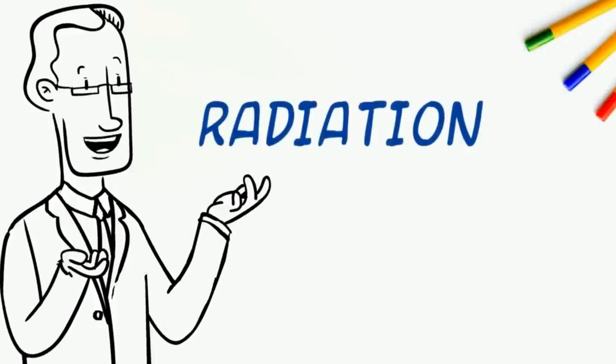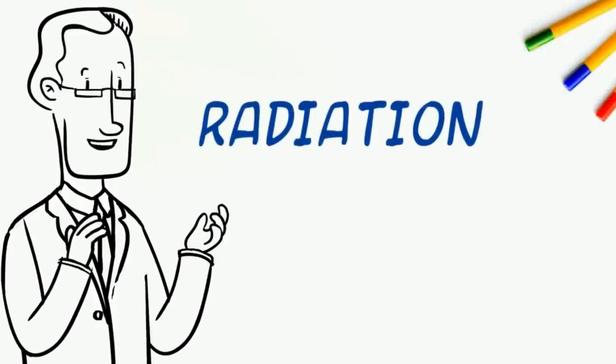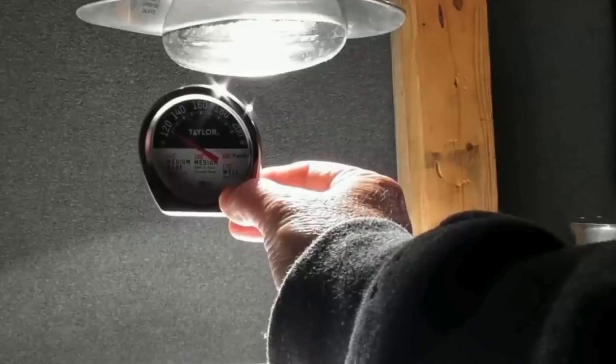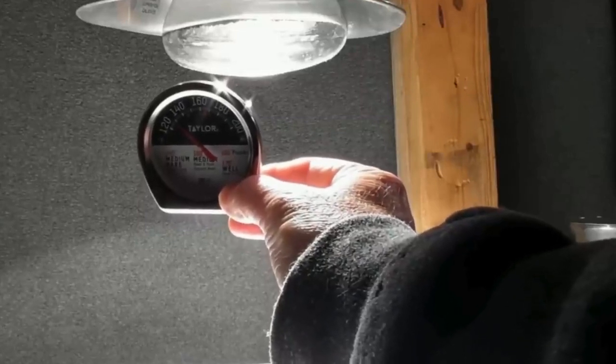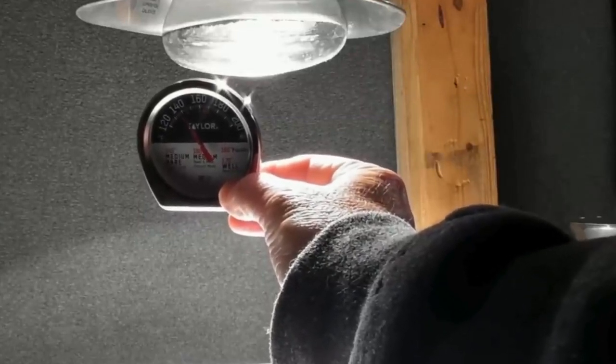Radiation heat is transmitted without any physical contact between objects. Watch how the temperature of the lamp is transferred to the thermometer without touching it.